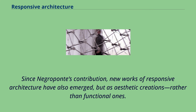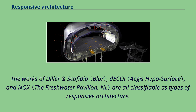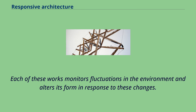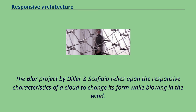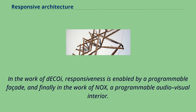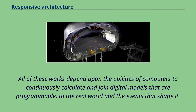Since Negroponte's contribution, new works of responsive architecture have also emerged, but as aesthetic creations rather than functional ones. The works of Diller and Scofidio, Decoy, and Knox are all classifiable as types of responsive architecture. Each of these works monitors fluctuations in the environment and alters its form in response to these changes. The Blur project by Diller and Scofidio relies upon the responsive characteristics of a cloud to change its form while blowing in the wind. In the work of Decoy, responsiveness is enabled by a programmable facade, and finally in the work of Knox, a programmable audio-visual interior. All of these works depend upon the abilities of computers to continuously calculate and join digital models that are programmable, to the real world and the events that shape it.